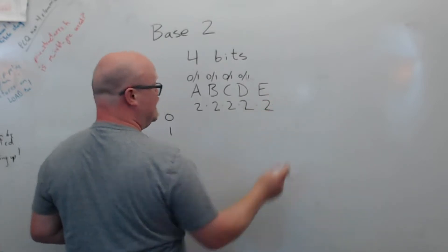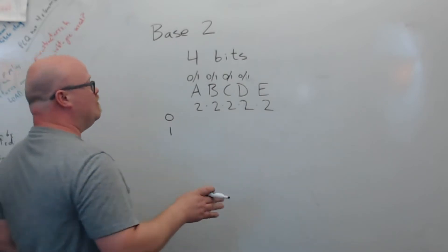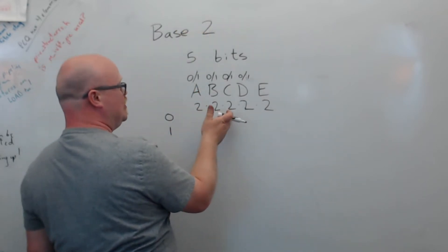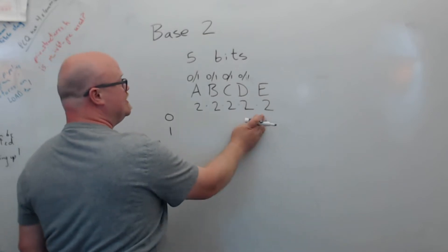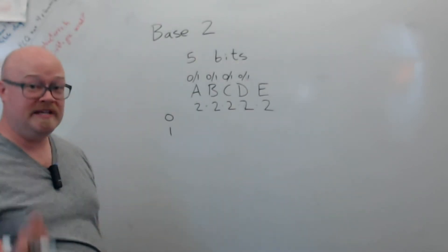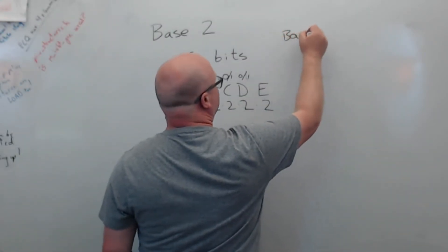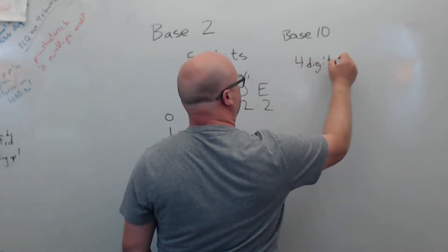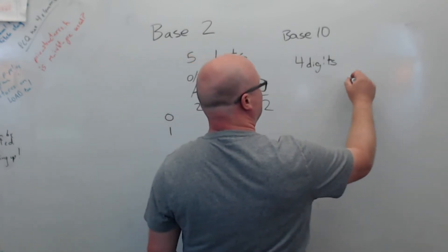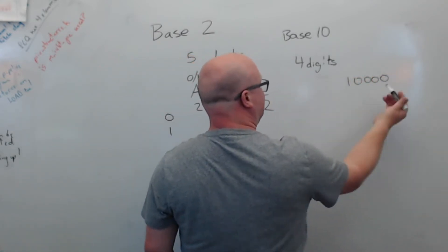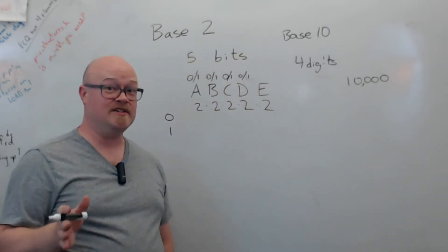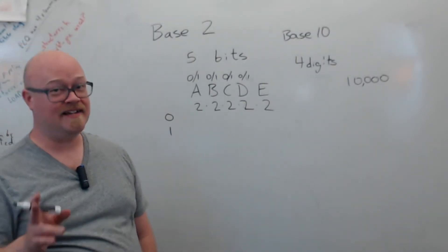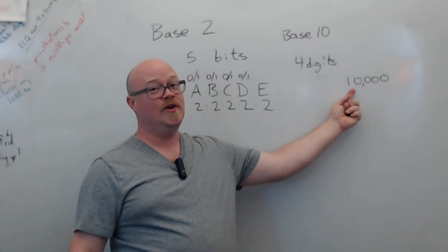It looks like this number correlates to the number of bits. When we did this in decimal base 10, we found that with four digits we could have up to 10,000 different values. The range didn't go from 0 to 10,000 or from 1 to 10,000 — it went from 0 to 9,999, which is just one less than 10,000. But the total number of different values was 10,000.